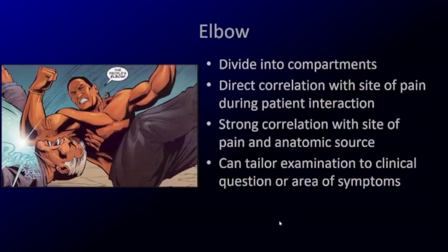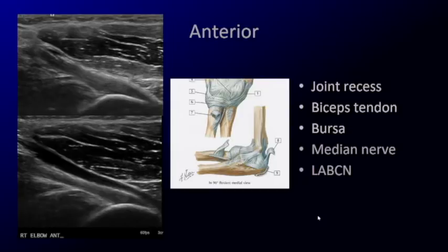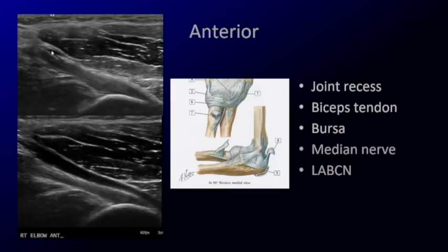Moving on to the elbow: unlike the shoulder, the pain is localized and will correlate directly with the structures you are scanning. You can do a targeted examination of the elbow and only examine the side that hurts. We divide it into anterior, posterior, medial, and lateral compartments. In the anterior compartment, I'll focus on the distal biceps tendon, which comes down and inserts onto the radial tuberosity. It sometimes does not appear hyperechoic because the tendon does not have a perpendicular orientation to the transducer as it dives — you can rock your transducer or scan through the brachial artery to get better visualization.